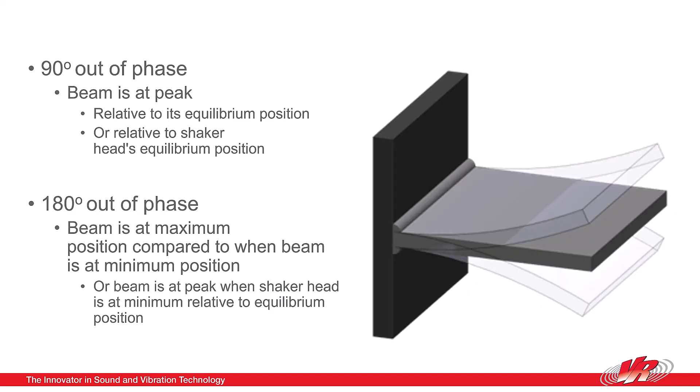If we considered the case of the cantilevered beam that we've been looking at, when the beam is vibrating and is at its peak compared to the shaker head, which would be at an equilibrium position, which would be the same as where the beam would be when it's not vibrating, peak compared to equilibrium position, we would say is 90 degrees out of phase.